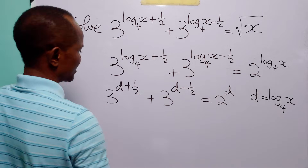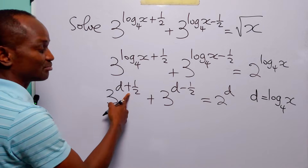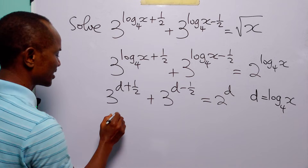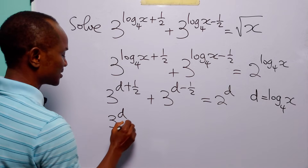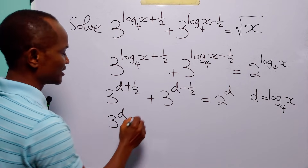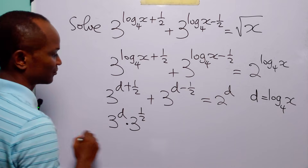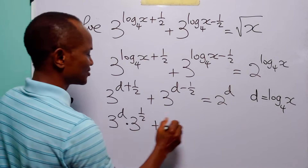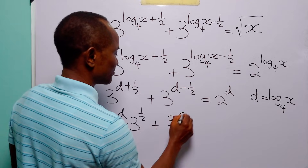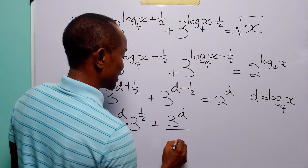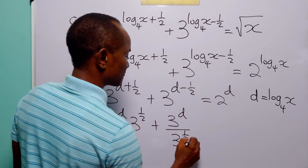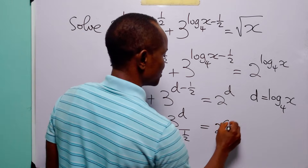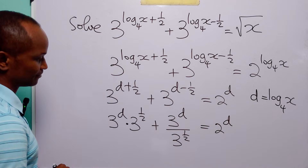Now let us simplify the left-hand side. Because of this addition, this is going to be 3 to the power log base 4 of x multiplied by 3 to the power half. And because of this subtraction, this is going to be 3 to the power log base 4 of x multiplied by 3 to the power negative half. And this is still equal to 2 to the power log base 4 of x.